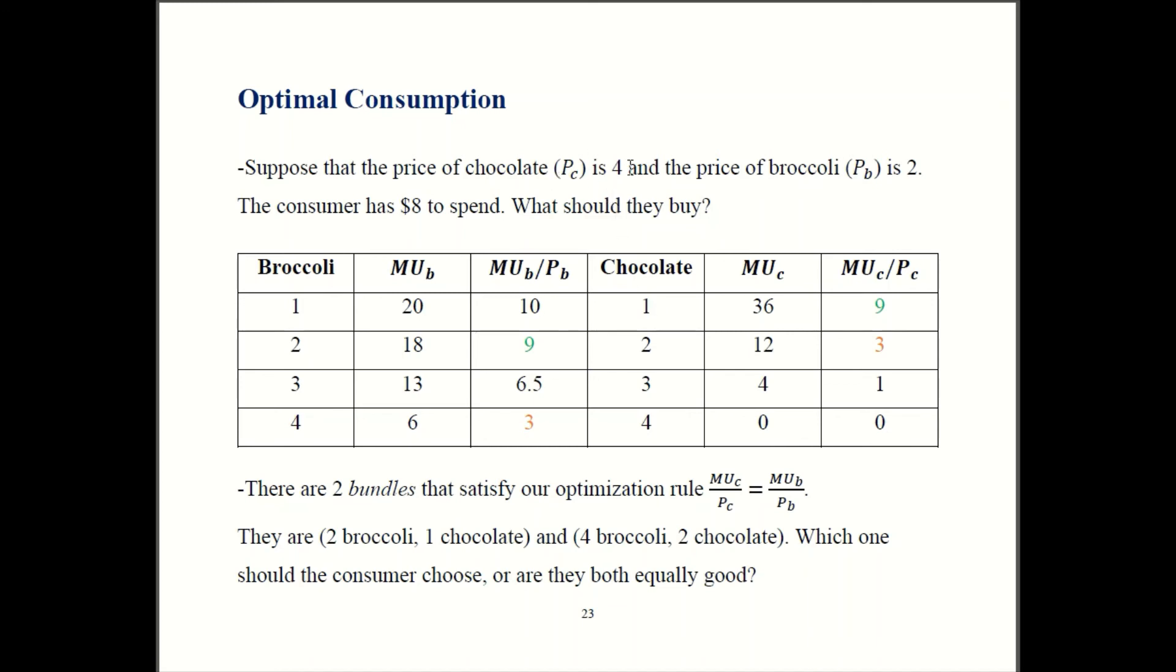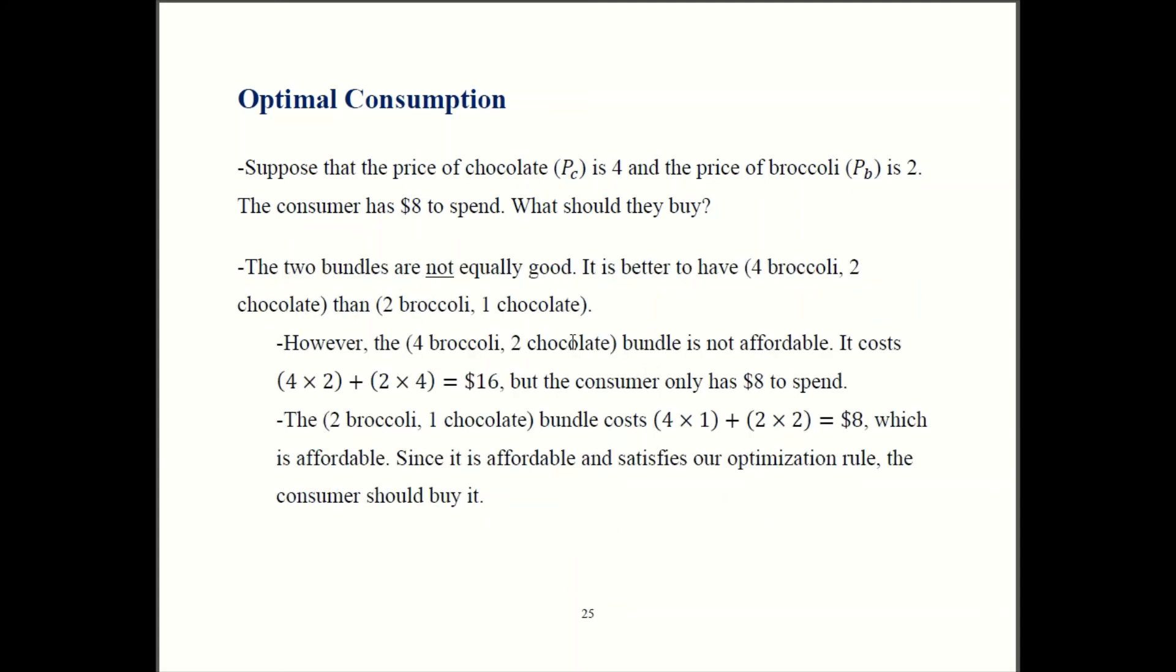The price of chocolate is $4. If you're buying one piece of chocolate, you're spending $4 on chocolate. So you buy that combination, that is that bundle of goods, of two broccoli and one chocolate. Then you're spending $8 on the food, so you're satisfying your budget constraint.